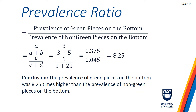Next, on slide 8, we have the prevalence ratio, which provides a nice summary of the relationship between the prevalence of factor 2 by those with and without factor 1. In our fruit loaf example, the prevalence ratio is the prevalence of green pieces on the bottom divided by the prevalence of non-green pieces on the bottom. If the prevalence of being on the bottom is equal between the green and non-green groups, the prevalence ratio would equal 1. If it's lower in the green group, the ratio would be less than 1. And if the prevalence is higher in the green group, as in our example, the ratio would be greater than 1 — and you can see it's about 8.25.